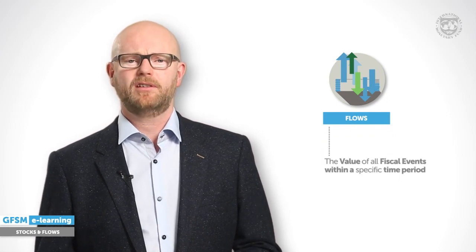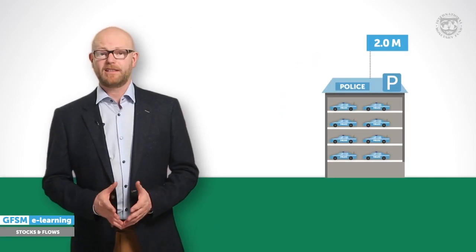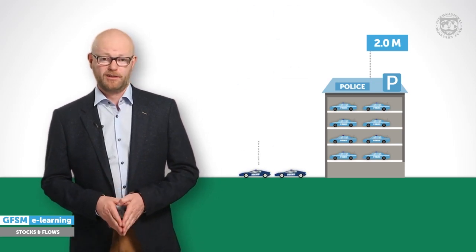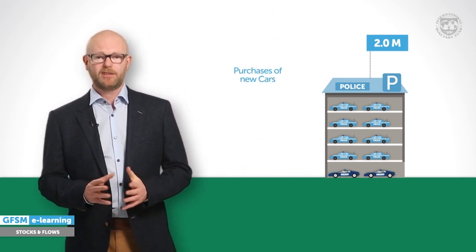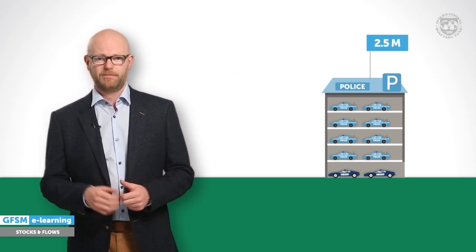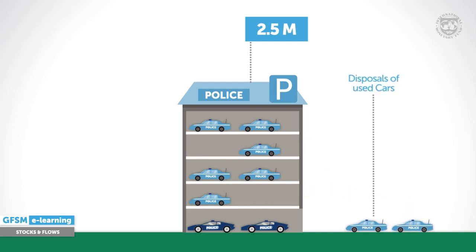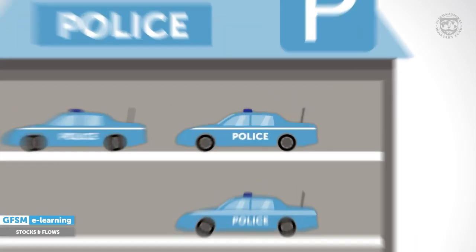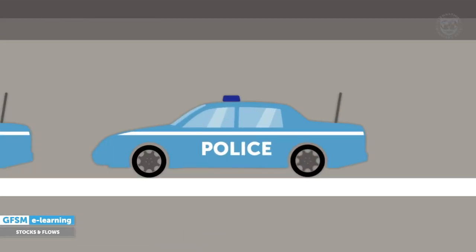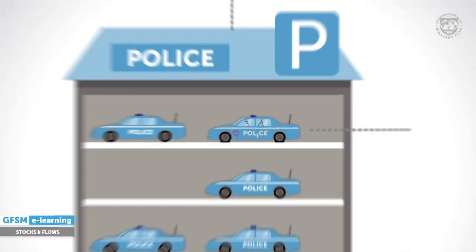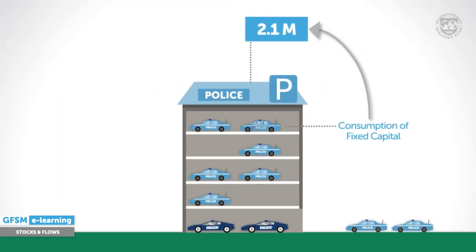To understand what happens between snapshots, we also need flow information. Flows will cover the value of all fiscal events that occurred in that period. In our example, that could be purchases of new cars. Adding brand new cars to the existing ones will increase the total value of the fleet, hence the stock value will rise. In that same period, the government could also sell some of the older cars, receiving money while decreasing the stock value. In addition, the cars will lose some value during the period just because time passes and they are used. This is called consumption of fixed capital in statistics — a concept related but not identical to depreciation in accounting.